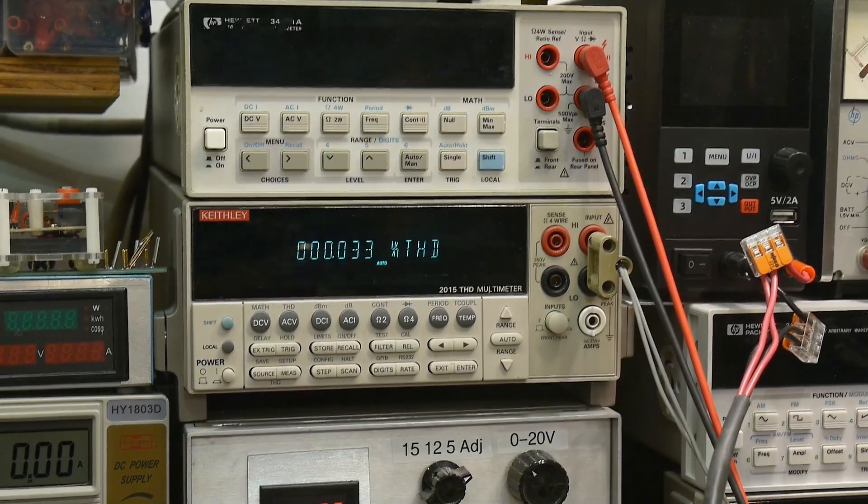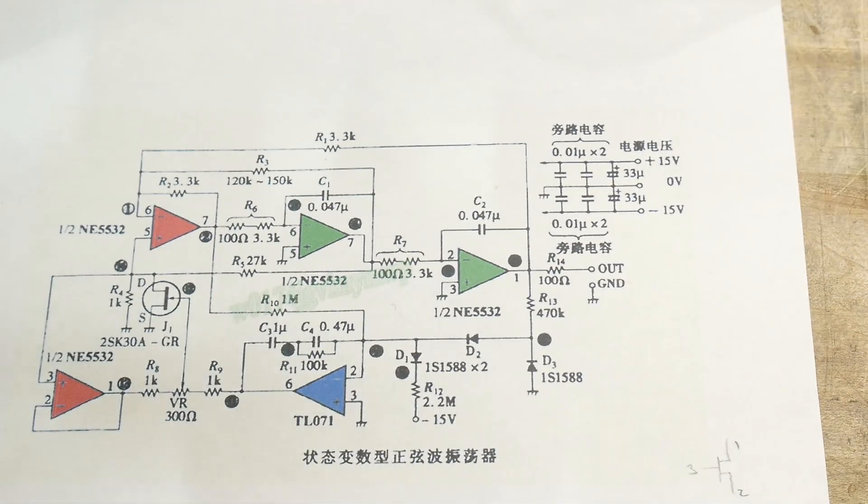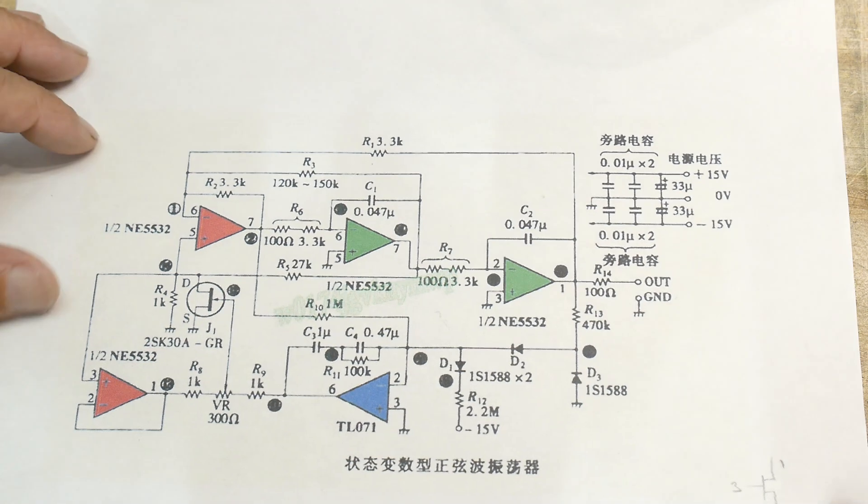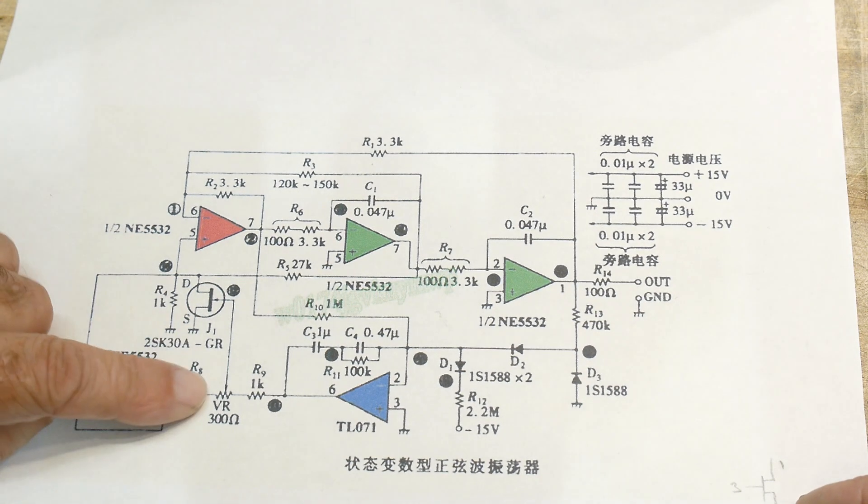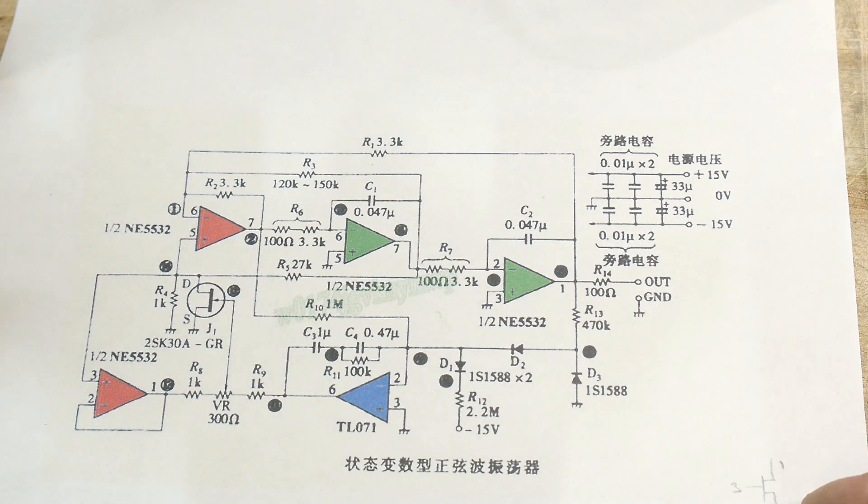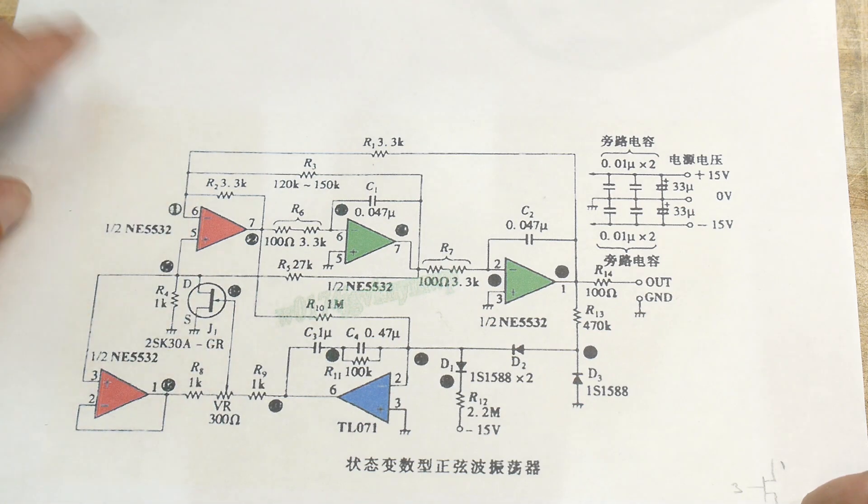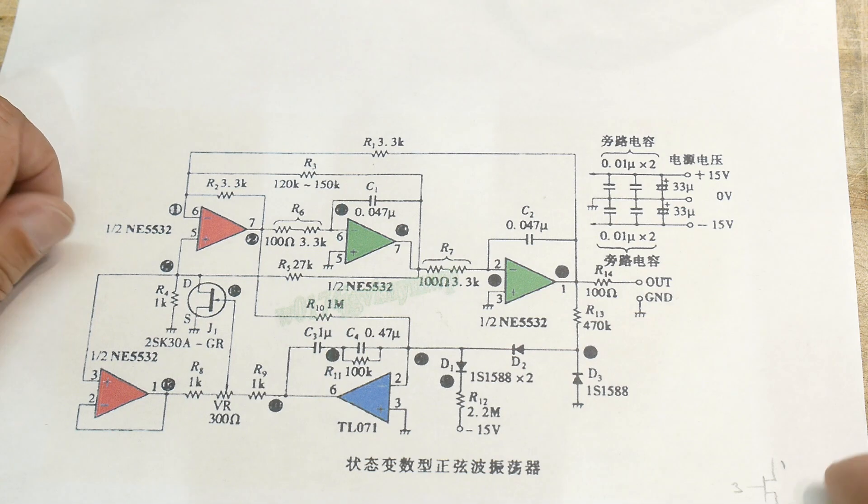Well anyway, very disappointed with this circuit. I don't know if I built it wrong, I don't think so. Maybe it needs some adjustments, I don't know. I did adjust this, it doesn't help. I mean, it's just a leveling thing. It doesn't seem to affect the harmonic distortion at all when I adjust that. I can show that to you if you want.